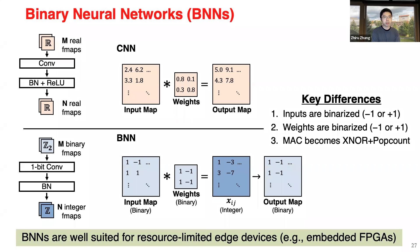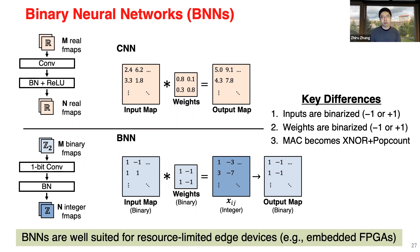A quick introduction to BNNs: with Binary Neural Networks, all weights and activations are binarized to either minus one or plus one using bipolar encoding. Compared to traditional CNNs using floating point or fixed point, the benefits are obvious — this is extreme quantization. We don't need expensive multipliers and additions; multipliers become XNOR operations, and the inner product becomes XNOR plus population count, which means counting the number of ones. There are many benefits, and BNNs are very well suited for resource-limited devices, particularly FPGAs. Many people also hope to use BNNs for processing-in-memory due to their low compute complexity.